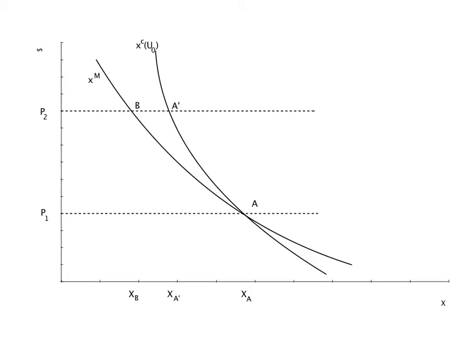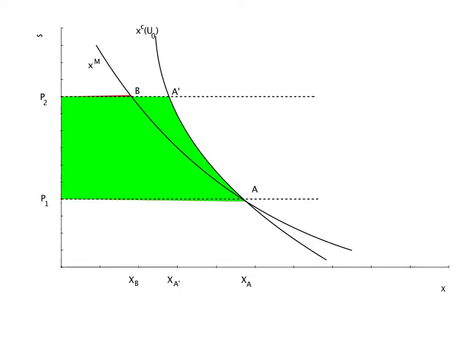The area to the left of the compensated demand curve between P1 and P2 equals the loss in consumer surplus from the price increase. This is the amount of income the consumer would need to receive to compensate her for the loss in utility from the higher price, the same as the CV we indicated earlier on the indifference curve diagram.